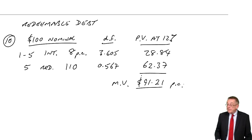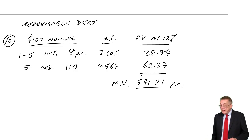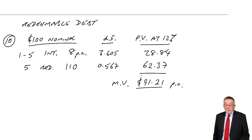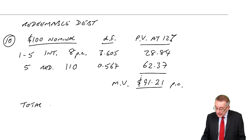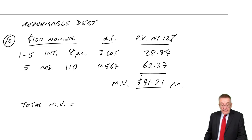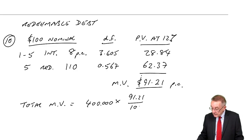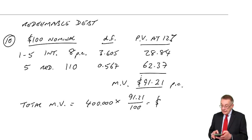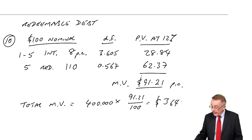Normally, we're working out the market value of one unit, so $100 nominal has a market value of $91.21. If they did want the total market value of all the debt in issue: the total nominal value is $400,000, and the market value is $91.21 for every $100 nominal, so the total market value of the debt in issue today would be $364,840.